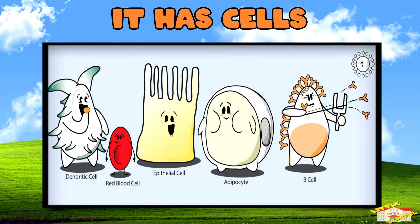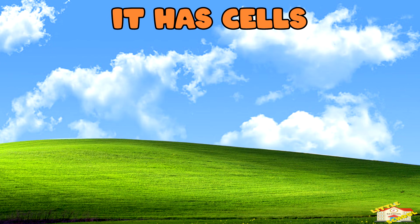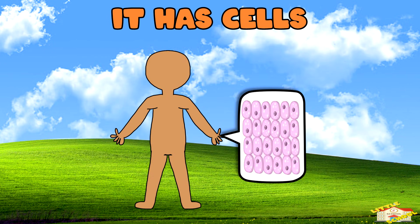Sixth, it has cells. All living things are made up of tiny building blocks called cells. Cells are tiny building blocks that make up all living things and help them stay alive and grow.